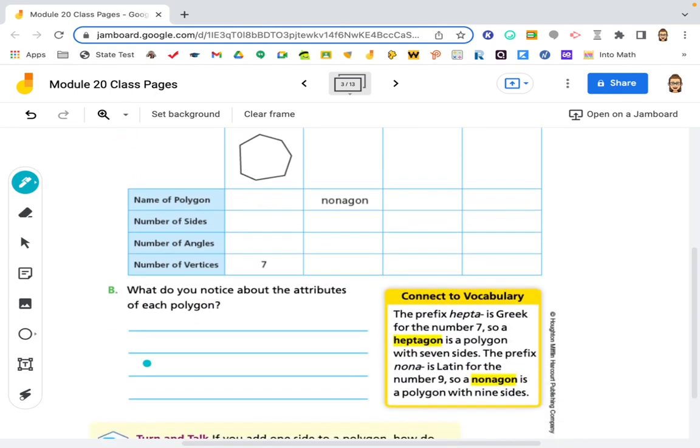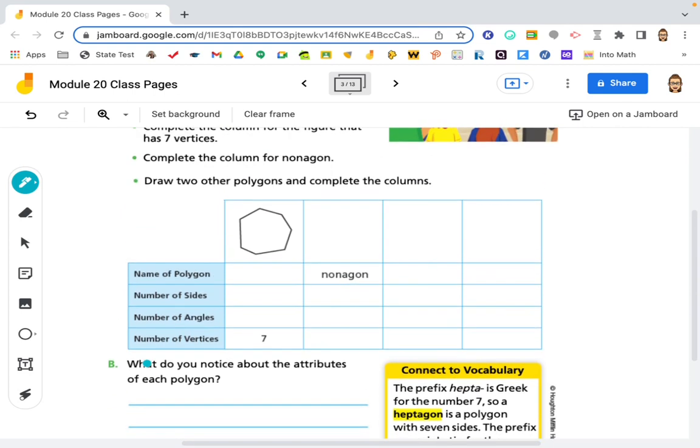This down here says the prefix hepta is Greek for the number seven. So a heptagon is a polygon with seven sides. Prefix nona is Latin for the number nine, so a nonagon is a polygon with nine sides. So the name of this is heptagon.